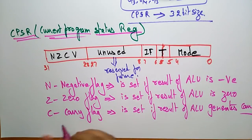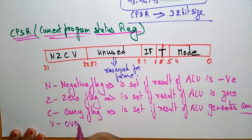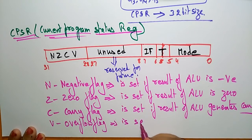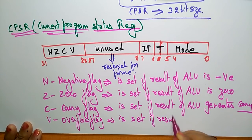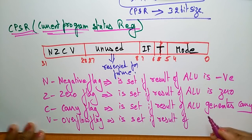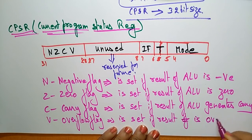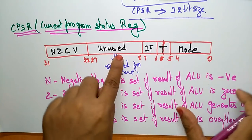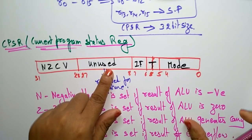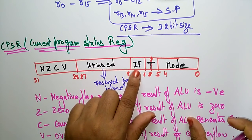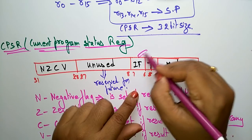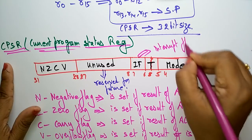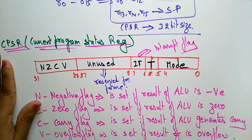V is the Overflow flag. This overflow flag is set if the result overflows. Those are the four condition flags. Bits 27 to 8 are reserved for future purpose. Now let's see the I flag — I is the Interrupt flag.